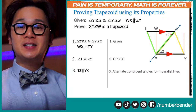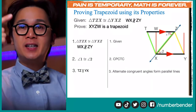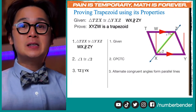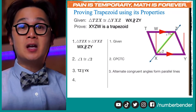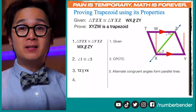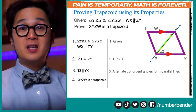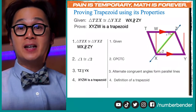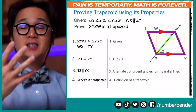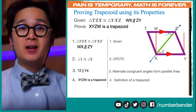Now that we have proven TZ and XY are parallel, and we are seeing that the opposite angles of our quadrilateral are also congruent, we are ready to declare that this quadrilateral is indeed a trapezoid. One of the conditions for a parallelogram to be a trapezoid is that one set of sides is parallel and the corresponding angles are congruent — and we have shown both. By the definition of a trapezoid, XYZW is indeed a trapezoid. This is how we proved this parallelogram using theorems from our previous lesson.